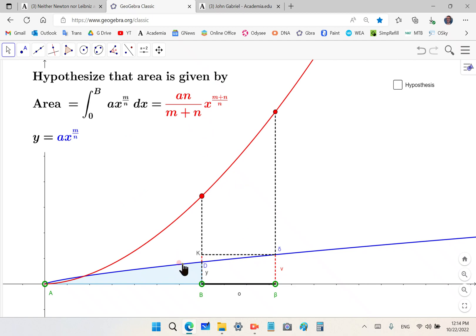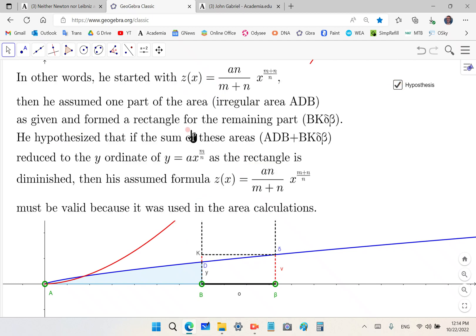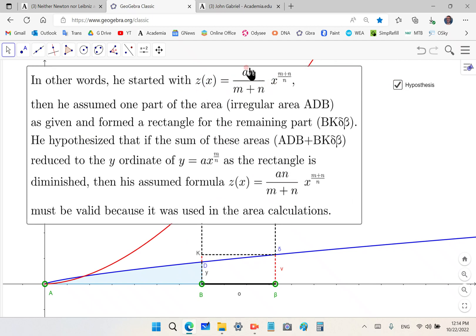He hypothesizes that the area under this blue curve, the area under the blue curve not the red curve because the red curve is the primitive or the integral, he hypothesizes that the area under the blue curve is given by this expression.